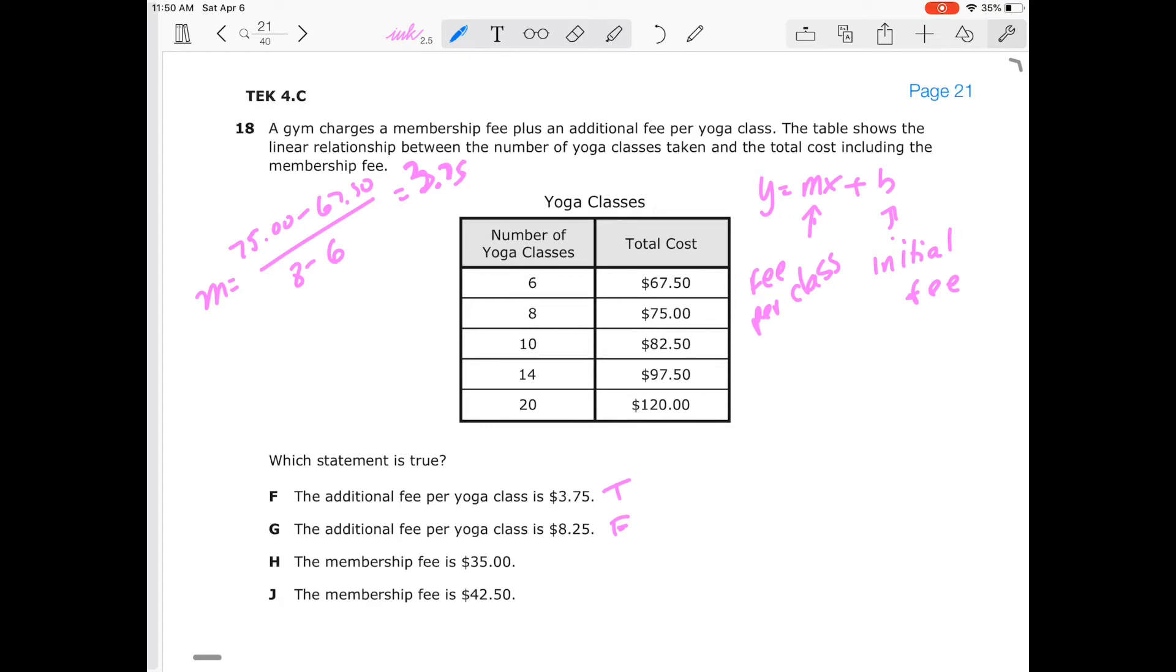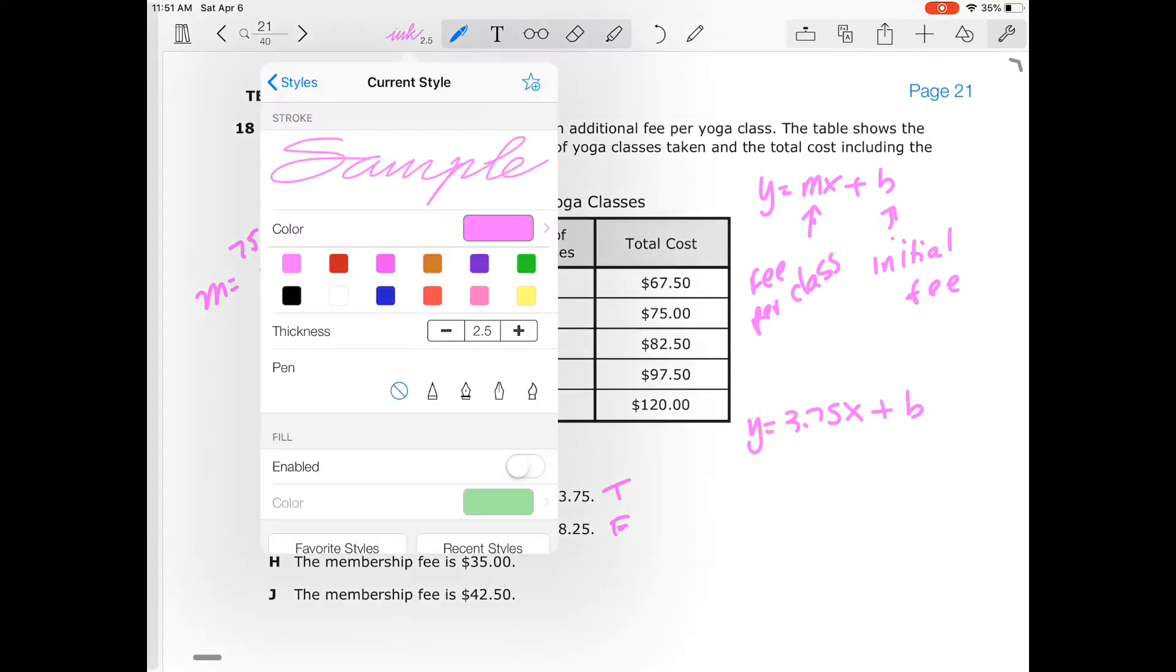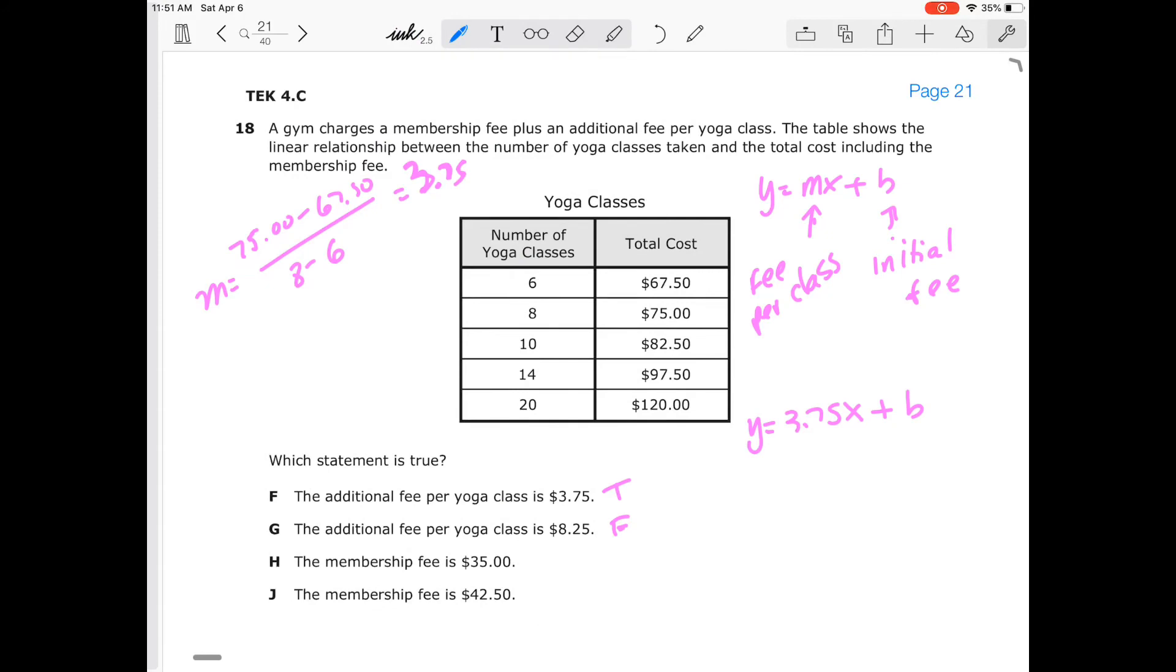So now let's go through and look at what our membership fee is. So that's going to be y equals 3.75x plus b. We don't know what b is. So I'm going to pick one of the other points. I can pick truly any point that I want to. And I'm going to plug that in. I'm going to pick, I can pick 75. So I'm going to pick 10 because that's going to make that a nice number. So that's going to be 82.50 equals 3.75 times 10 plus b. This is going to become 82.50 equals 37.50 plus b. I'm going to subtract 37 from both sides and that will give me $45 equals b. So the initial fee for the membership is $45, which is neither one of these. So our answer choice is F.